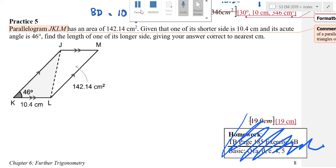Right, so given that the shorter side is 10.4, the acute angle is 46 degrees, find the length of the longer side.